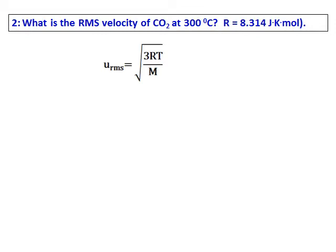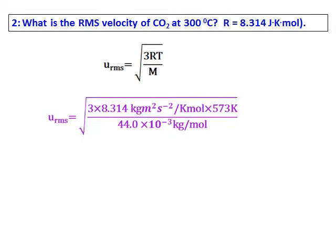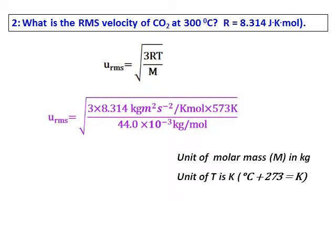Question 2: Find the root mean square velocity of carbon dioxide at 300 degrees Celsius. Use the formula square root of 3RT over M, with R equals 8.314 J/(mol·K). Since R has units of joules (kg·m²·s⁻²), the molar mass must be in kilograms. Also, temperature must always be in Kelvin — add 273 to convert. With these units correct, the calculation is straightforward to get the RMS velocity.